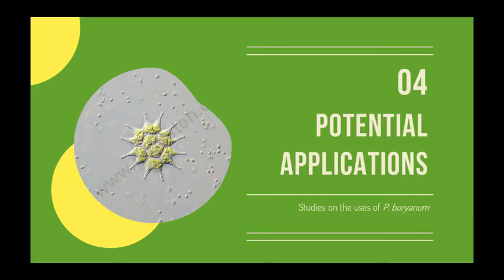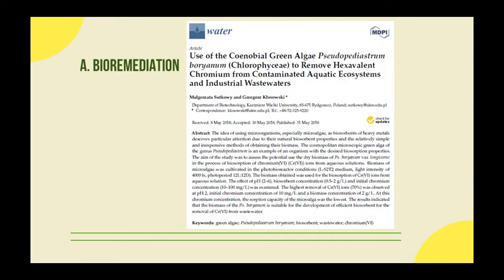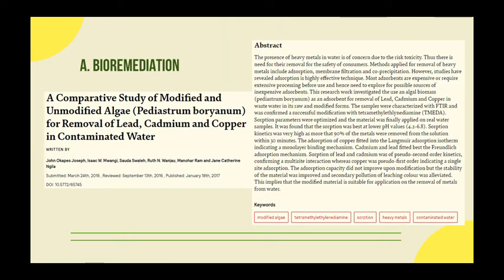Finally, we go to the potential uses of P. boryanum. Microalgae exhibit natural biosorbent properties and are relatively inexpensive to obtain, making them a potential bioremediation agent for heavy metal pollution and wastewater treatment. One study assessed the biosorbent capacity of the dry mass of P. boryanum for chromium ions in aqueous solutions. The highest removal of chromium ions attained was 70%, making P. boryanum a suitable agent for the development of an efficient biosorbent in chromium removal from wastewater. In another study, the biosorption capacity of modified and unmodified P. boryanum for the removal of lead, cadmium, and copper in contaminated water was evaluated. They found an efficiently high adsorption rate at low pH values, with more than 90% of the metals removed from the solution within 30 minutes.